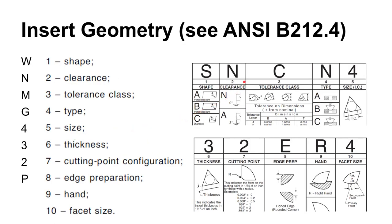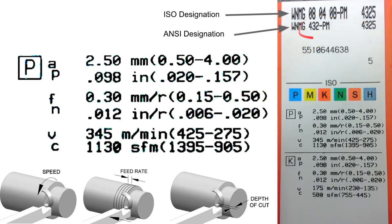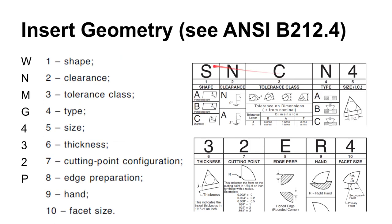Insert geometry should be a review. There's an ANSI code and an ISO code — essentially interchangeable, with the ANSI giving inch designations and ISO giving metric sizes. This comes from the ANSI B212 standard. The first character in the code is the shape — you have various shapes in a chart. The second character is the clearance angle, then tolerance class, and then the type. There's a lot of meaning packed into that code.